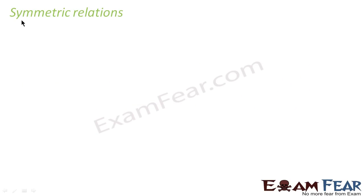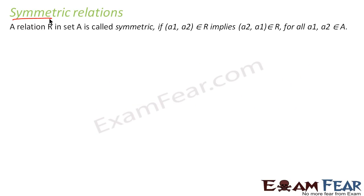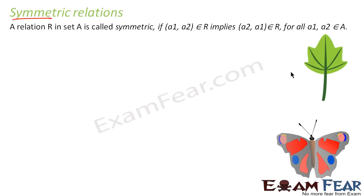As the name says, symmetric means things should be the same. For example, look at the butterfly — this is symmetry. Whatever you see on this side, the same thing you see on the other side. Similarly, this leaf is also symmetric. A lot of figures in the real world are symmetric.